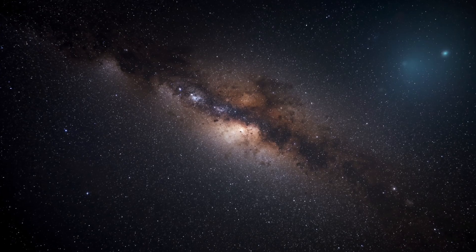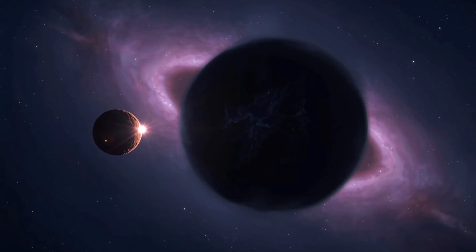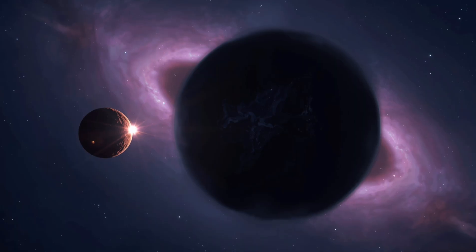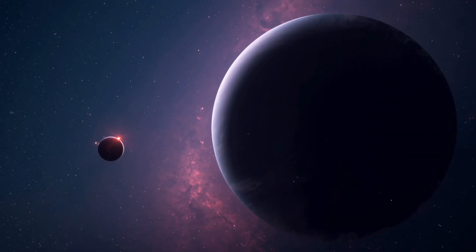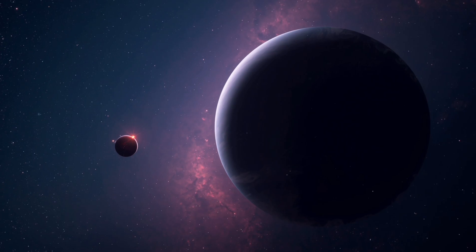For comparison, the supermassive black hole at the center of the Milky Way, Sagittarius A*, has a mass of about 4 million solar masses, which means Ton 618 is more than 16,000 times larger.